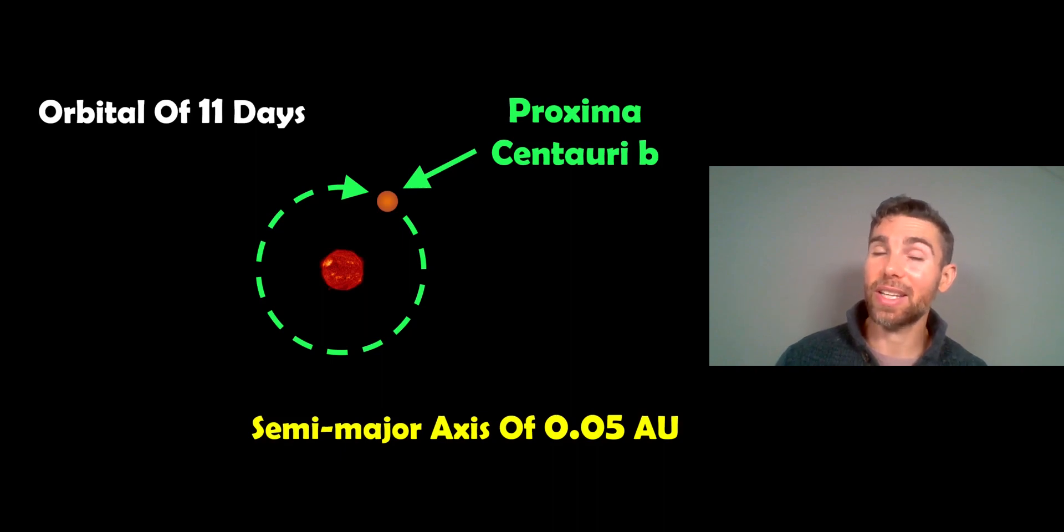So its semi-major axis, which is its orbital radius, is 0.05 AU. Now 1 AU is the average distance from the Sun to the Earth. So you're looking at about 5% of that distance for its orbital radius for this one.